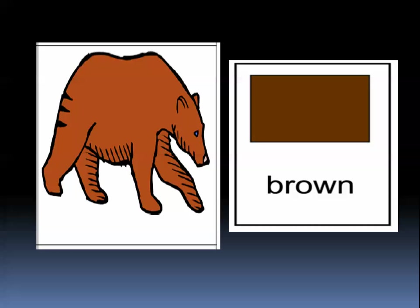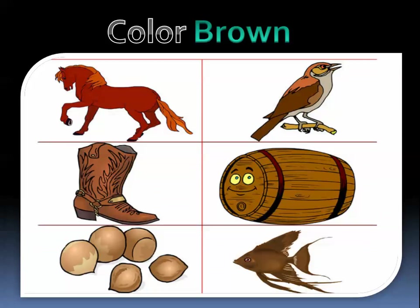Let's go through another color. This color is called brown. Can you see this bear? This bear is brown. Do you know something else that is brown? We have a horse — this horse is brown. And this bird is brown too. The shoes and the barrel are brown. These nuts are brown. And this fish is also brown. All these things are brown.